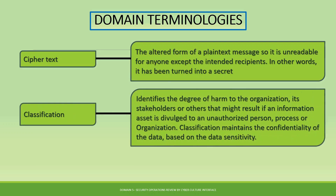Classification. We are talking about the classification of data. This identifies the degree of harm that the data can cause to an organization or stakeholders if an information is divulged or an unauthorized person gains access to this data. So classification is basically indicating the degree of sensitivity of the data. If you classify data as very critical, it means that if that data is divulged or goes into the wrong hands, it can cause critical harm to the organization.